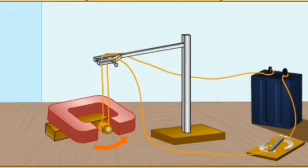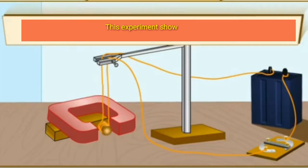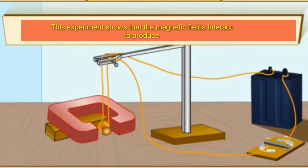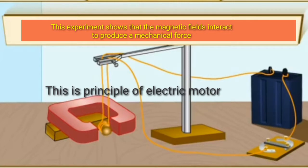Reverse the direction of the current. The cork moves in the opposite direction. This experiment shows that the magnetic and electric fields interact to produce a mechanical force. This is the principle of an electric motor.